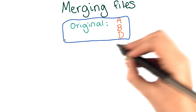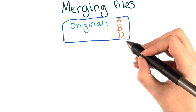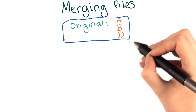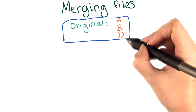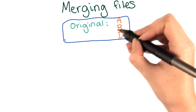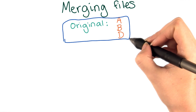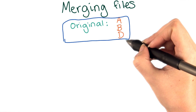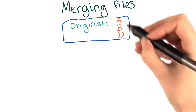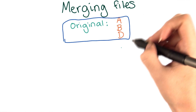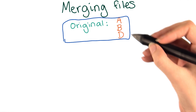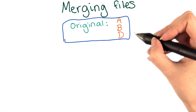In this example, just like in the last one, the original file contains a couple of lines: A, B, and D. Remember, these are just stand-ins for lines, not the content themselves.